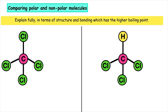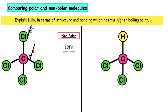Let's explain fully in terms of structure and bonding which of these molecules has the higher boiling point. Looking at carbon tetrachloride first: is there a difference in electronegativity? Yes — carbon is 2.6 and chlorine is 3.2. Is it one of our symmetrical shapes — linear or tetrahedral? Yes, it is tetrahedral. Do we have the same pull for the bonding electrons around the central atom? In this case we do, so symmetry cancels out polarity — this would be non-polar and only have London dispersal forces.